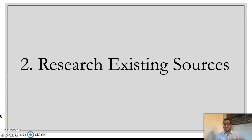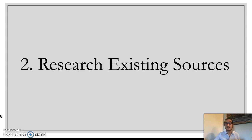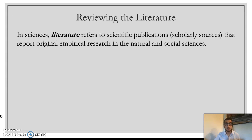After we've selected our topic for sociological research, the next stage of the scientific method is researching existing sources. This is a very important and oftentimes very time-consuming portion of the research process, something that we call reviewing the literature.